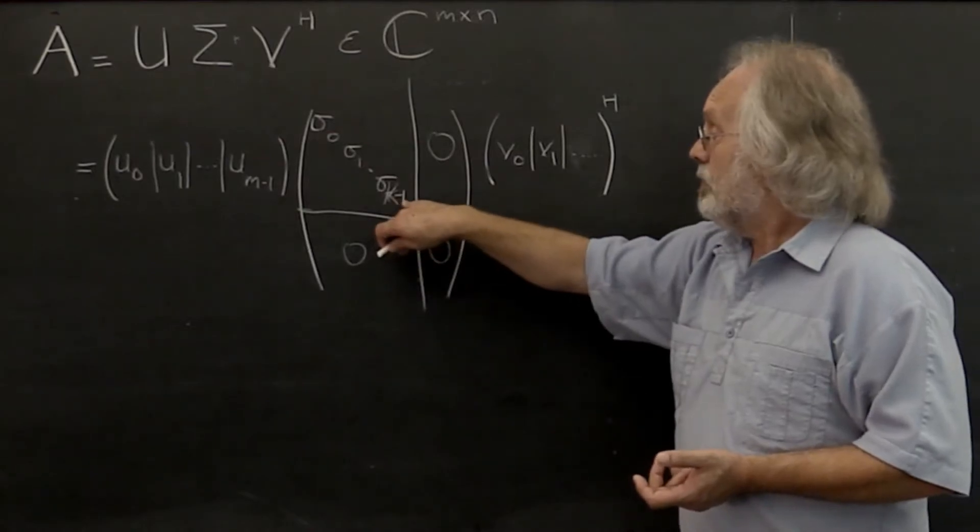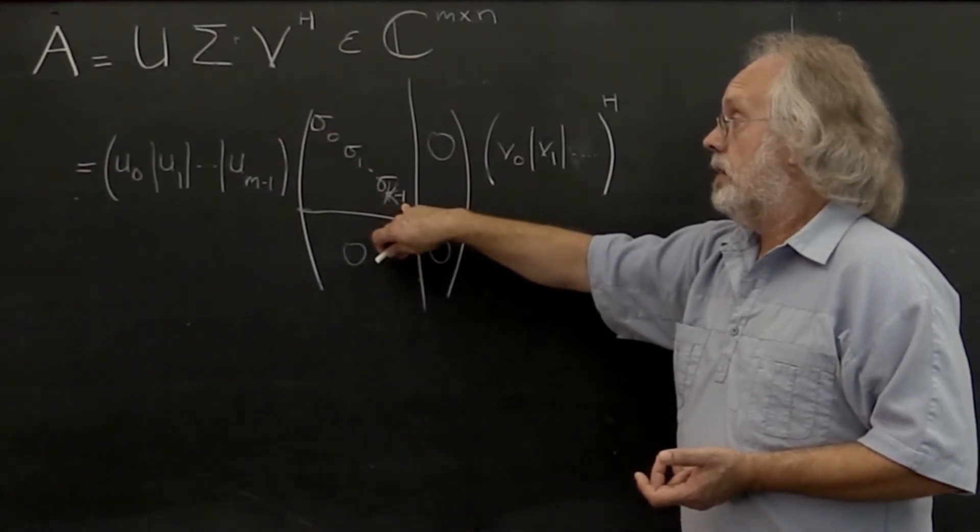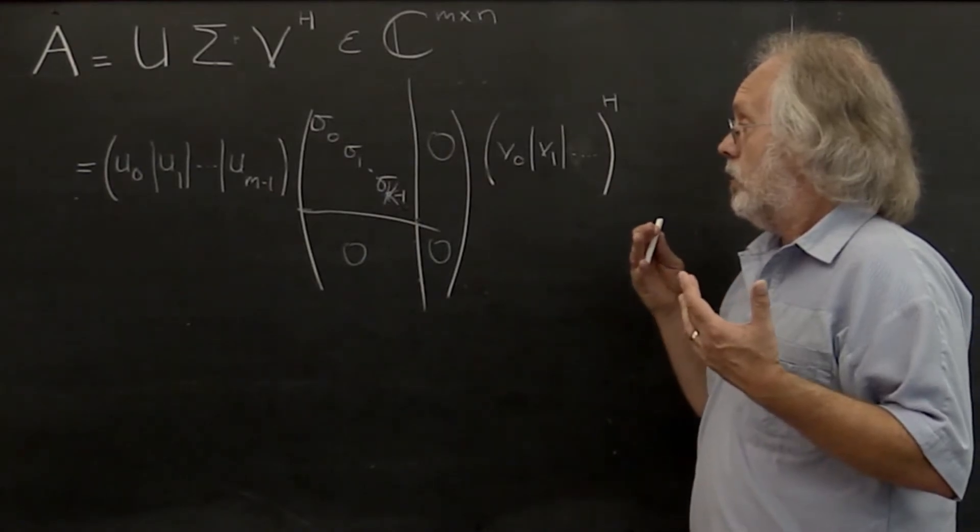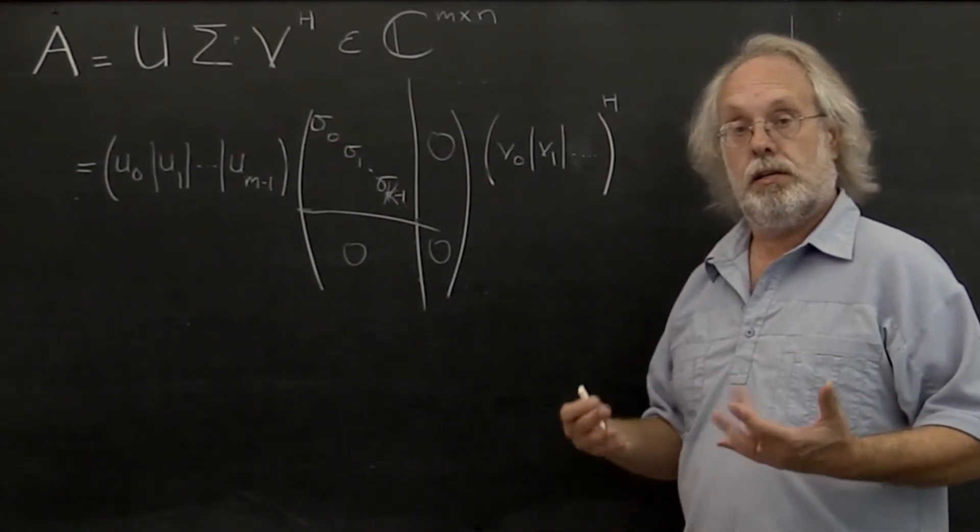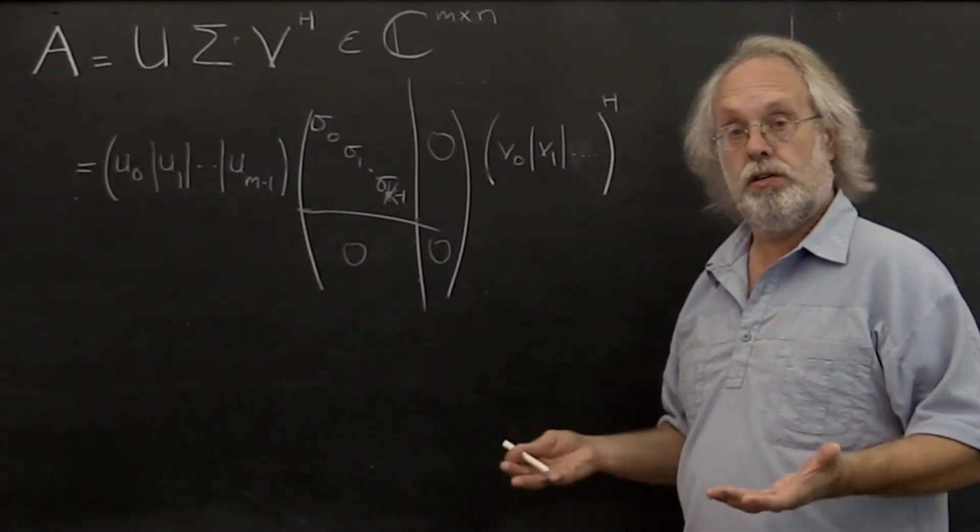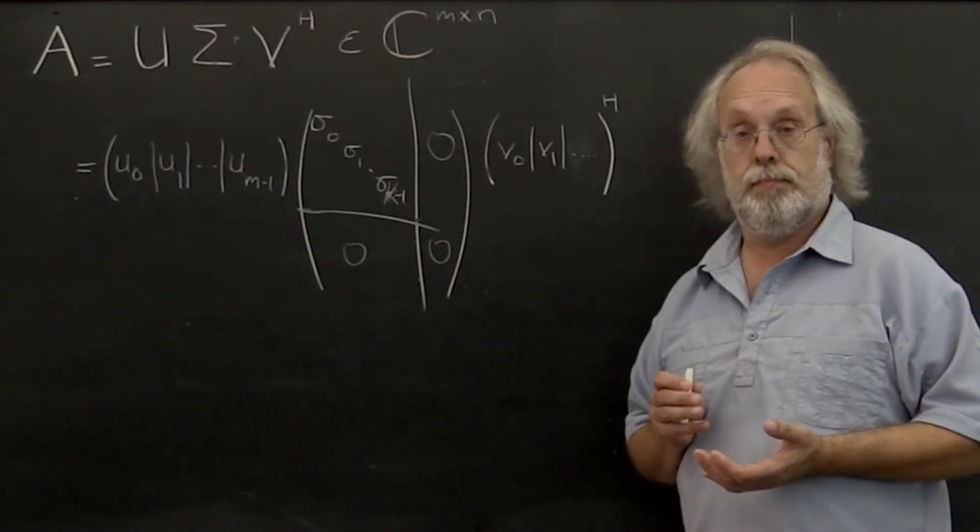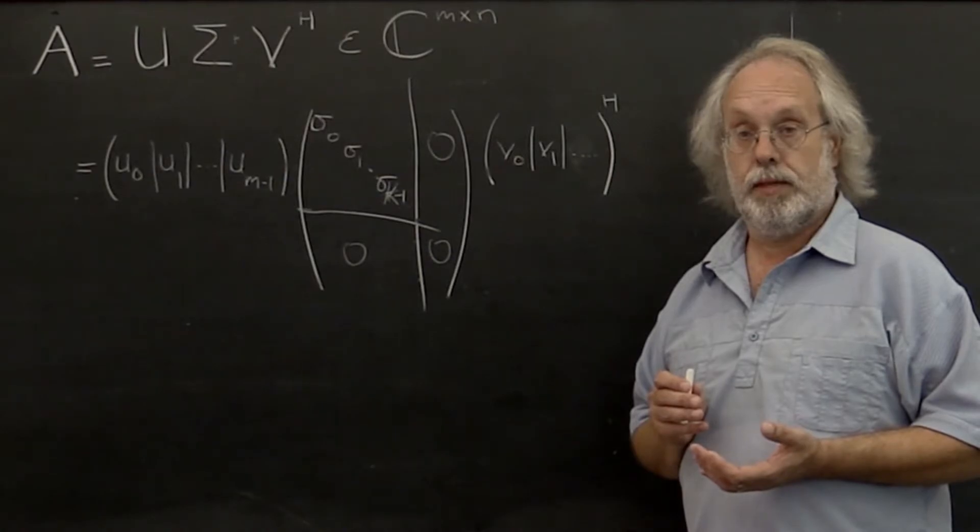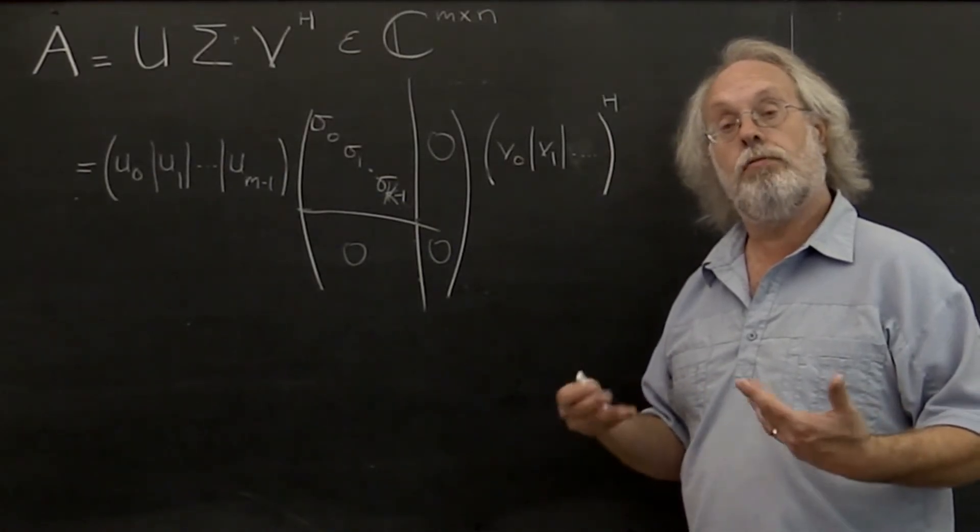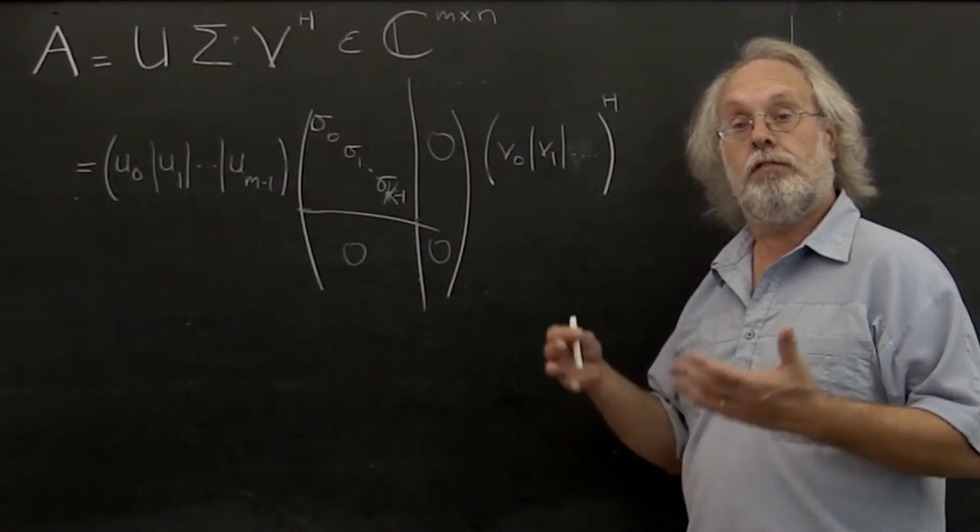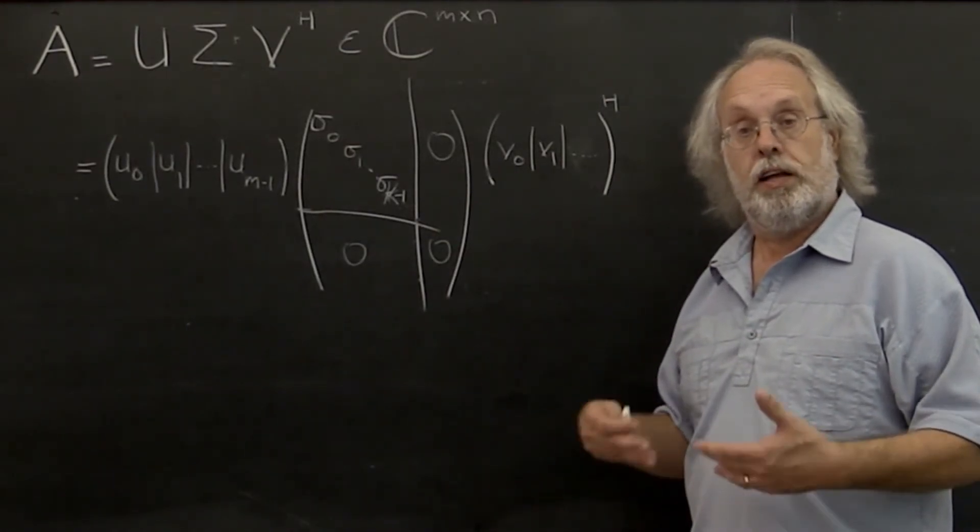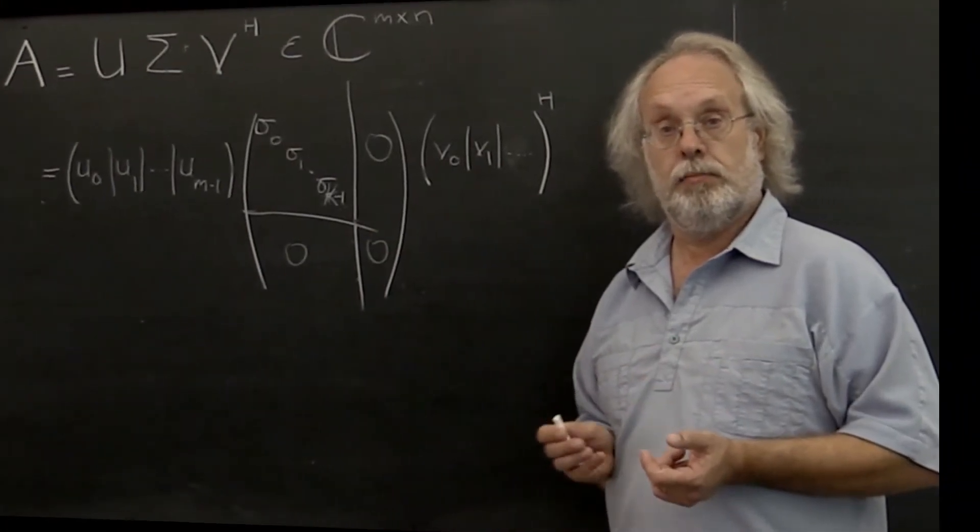the resulting matrix is the rank k matrix that in the two-norm or the Frobenius norm is closest to matrix A. So now we have a way of detecting the rank of a matrix, or the effective rank of a matrix.